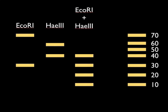As you can see, EcoRI has a 70 and a 30 kilobase size fragment, which equals 100. For HaeIII, there's a 40 and a 60 kilobase size, which is another 100. And then for the double digest, there's a 40, 30, 20, and 10, which altogether equals 100.